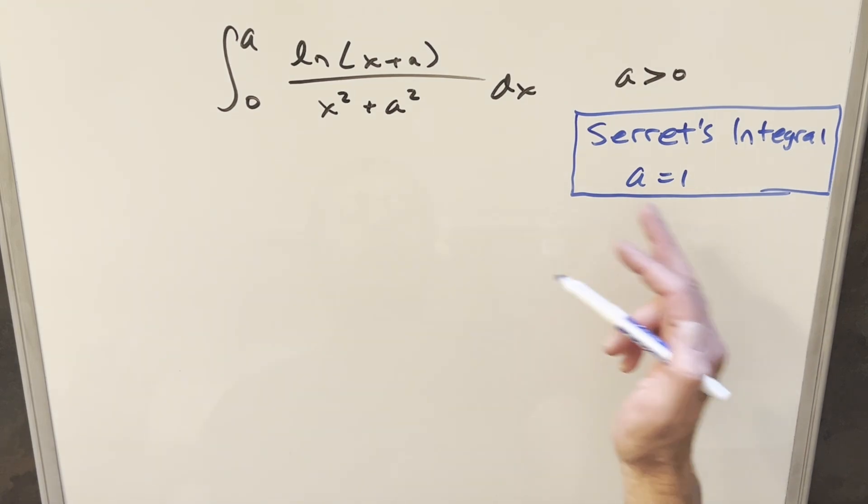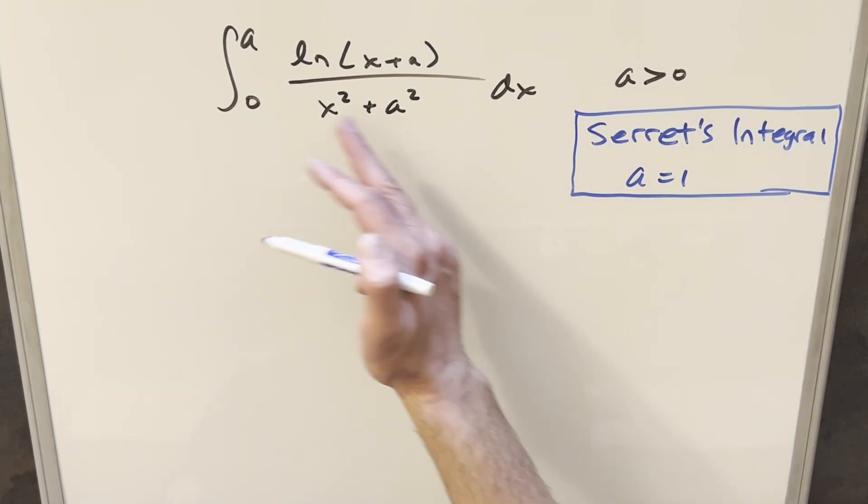Notice that this is the same thing as Serret's integral, which I've done not too long ago. The only difference, for Serret's integral it's going to be A equals 1, bounds going from 0 to 1. For this thing, we're going to do basically the same methods I did on this one, but just get a generalized solution for any A.